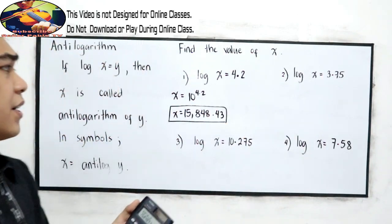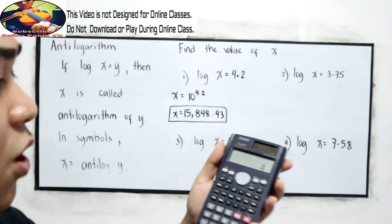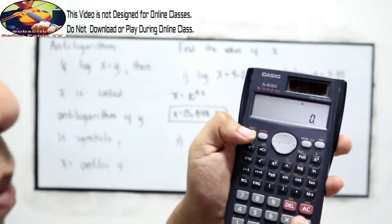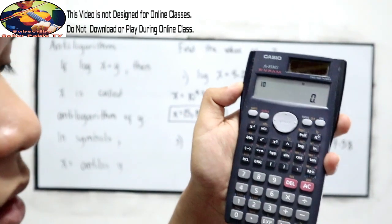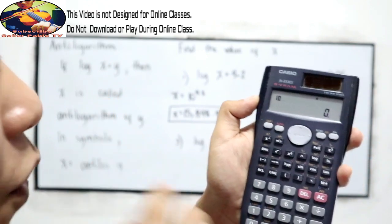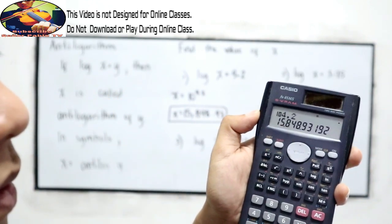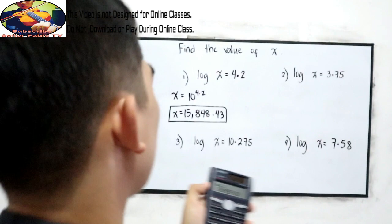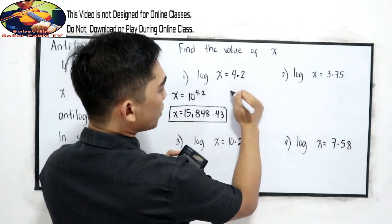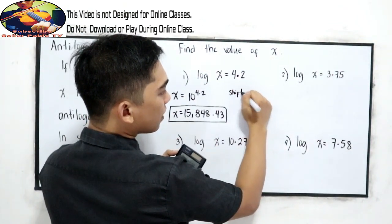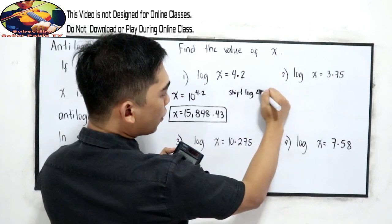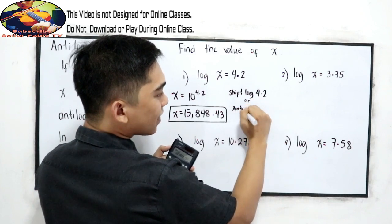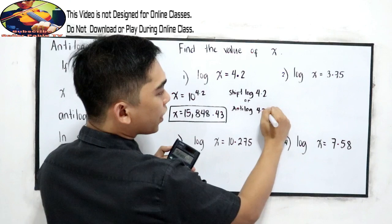The other way is to press the inverse of log, or press shift, then log, then 4.2. It's also the same answer: 15,848.93. So press shift, log, 4.2 — or antilogarithm of 4.2.